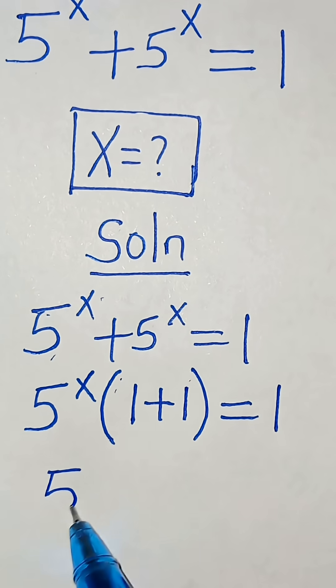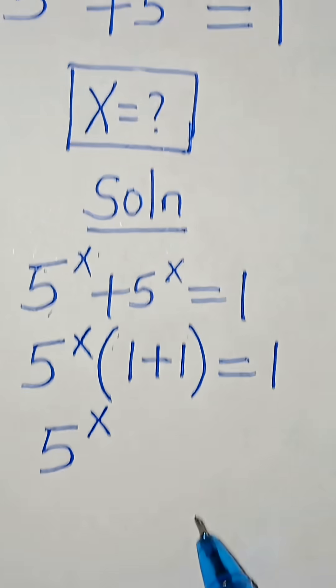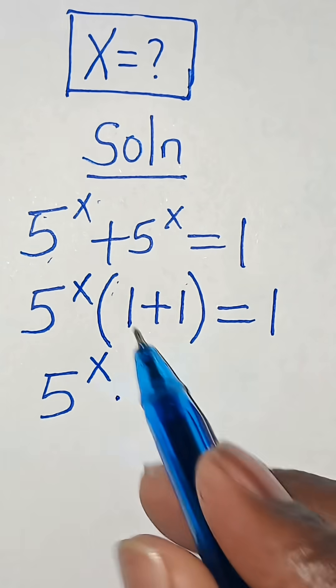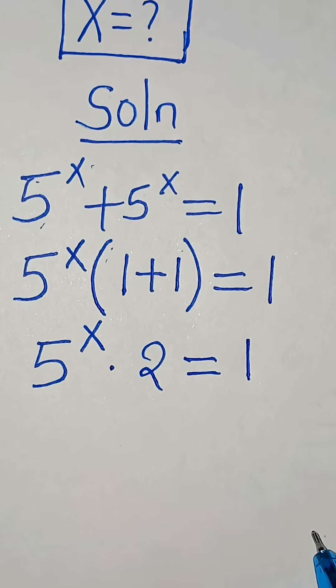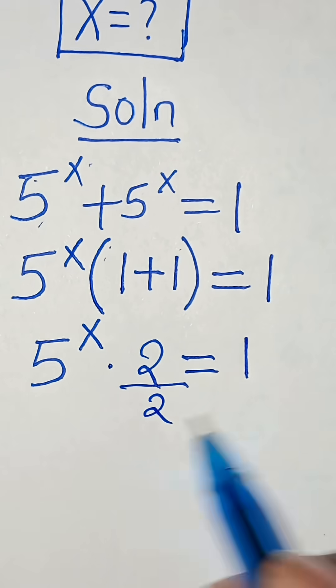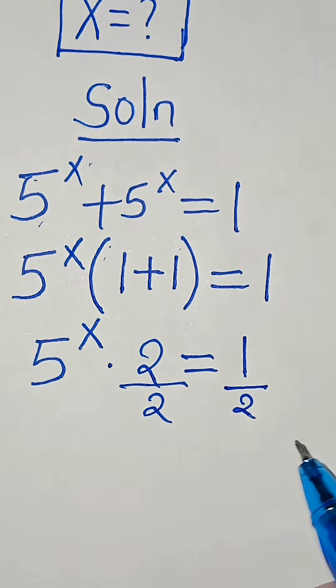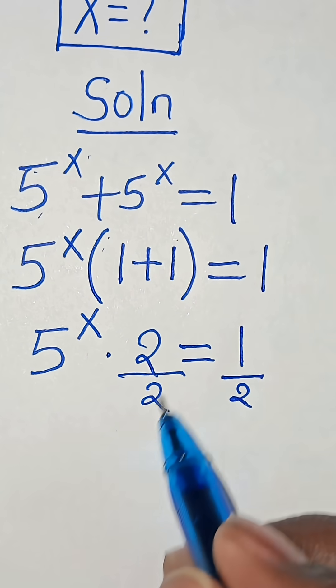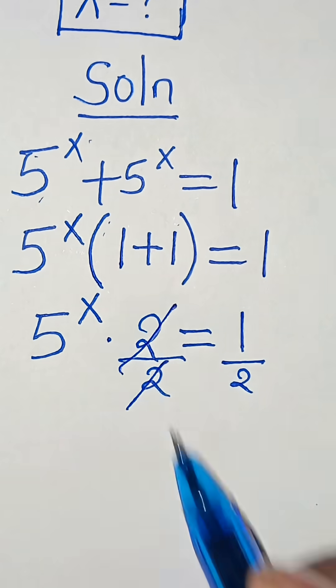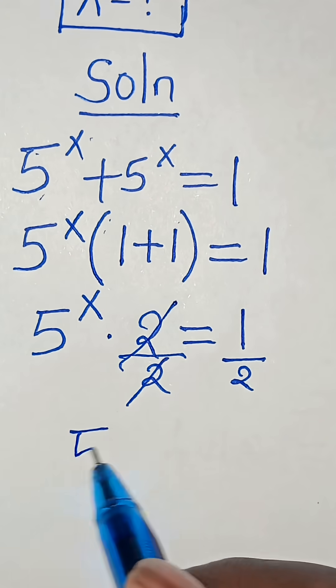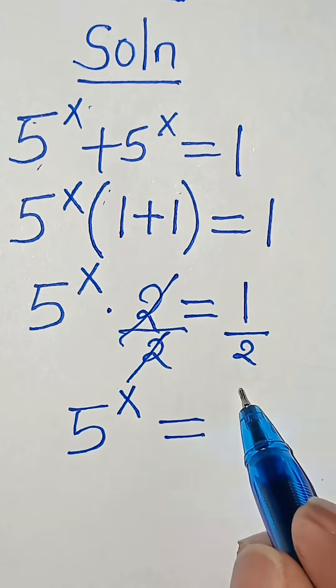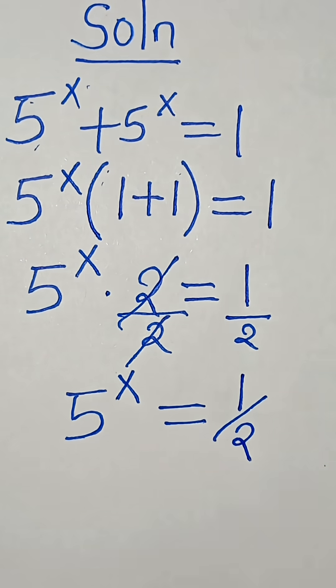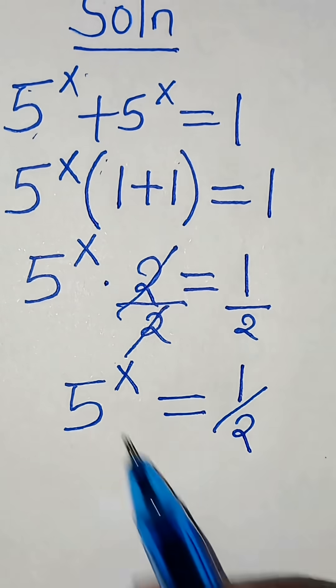So we have 5 to the power of x times 1 plus 1, which is 2. Then this is equal to 1. Let's divide both sides by 2. Now here we have 2 and 2, which simplifies, so that we have 5 to the power of x equals one half.